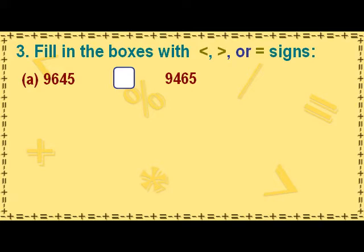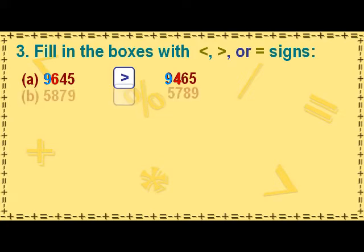In the given numbers, the digit 9 in the thousands place is the same in both numbers. The next digit 6 in the hundreds place of the first number is greater than the digit 4 in the hundreds place of the second number. Hence, the first number is greater than the second number, so we put the greater than sign after the first number.